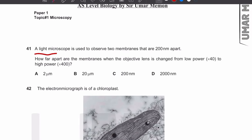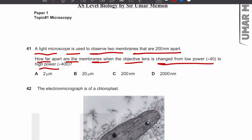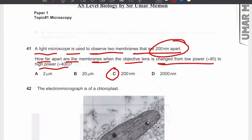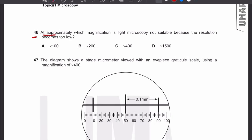MCQ number 41: a light microscope is used to observe two membranes that are 200 nanometers apart. When the objective lens is changed from low power ×40 to high power ×400, how far apart are the membranes? The actual distance between the membranes does not change — you simply get a magnified image. The actual size of the object stays the same.